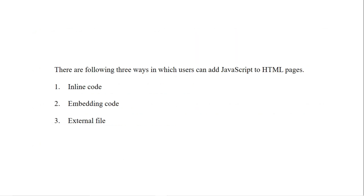There are 3 ways in which a user can add JavaScript to HTML pages, or we can say there are 3 types of JavaScript. The first one is inline, the second one is embedding, and the third one is external JavaScript. All these types are similar to the types of CSS. There are 3 types of CSS: inline CSS, internal CSS, and external CSS. Inline CSS is the same as inline JavaScript, internal CSS is the same as embedding JavaScript, and external CSS is the same as external JavaScript.